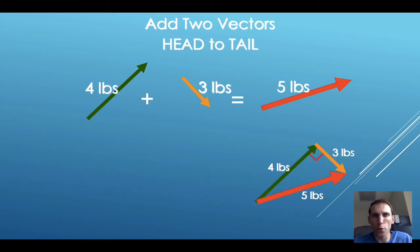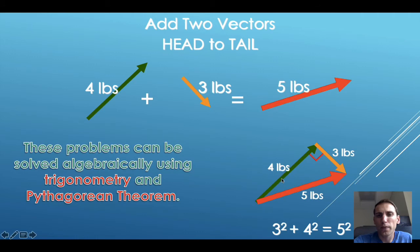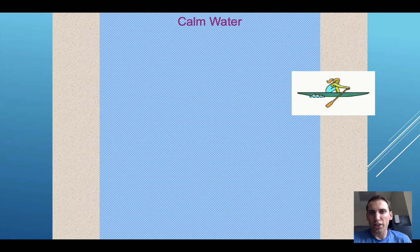When we work through problems like this, for the most part, we're going to see that the vectors that we need to add form right angles. So the way that we can find the magnitude of our resultant vector is through Pythagorean theorem. Hopefully you guys are all familiar with that. a squared plus b squared equals c squared. We can also find the direction of this resultant vector using trigonometry.